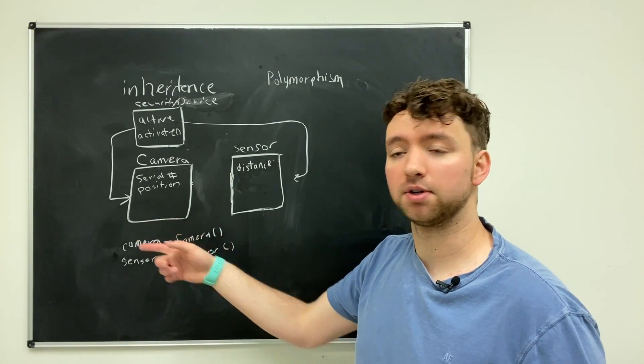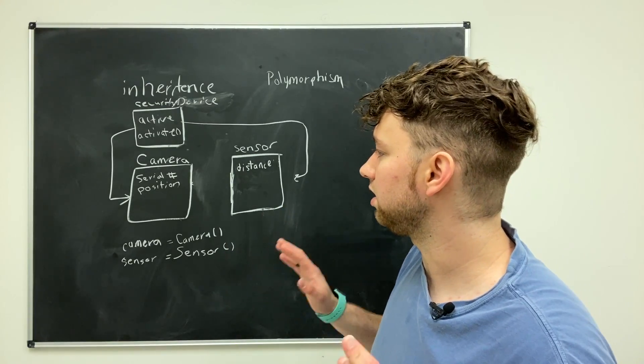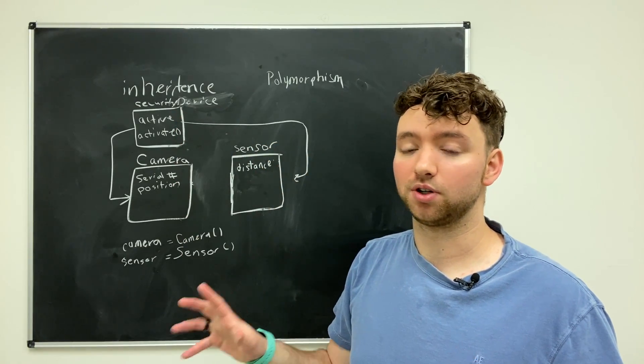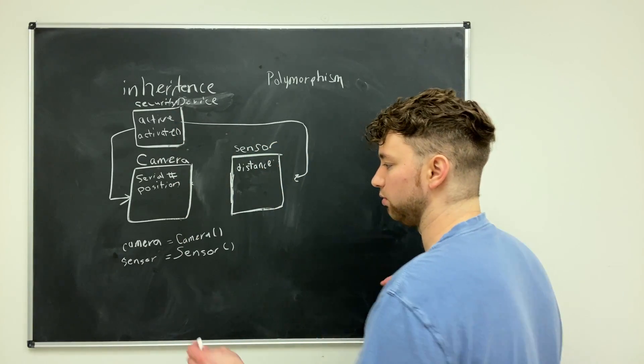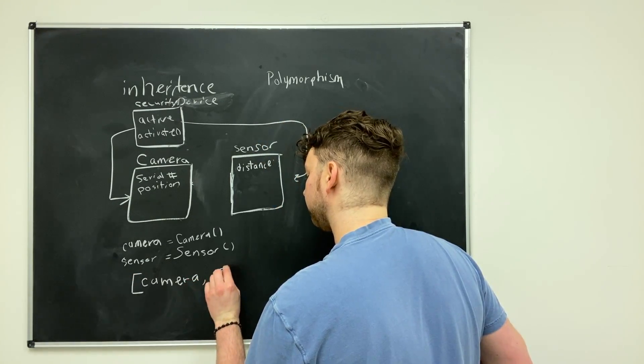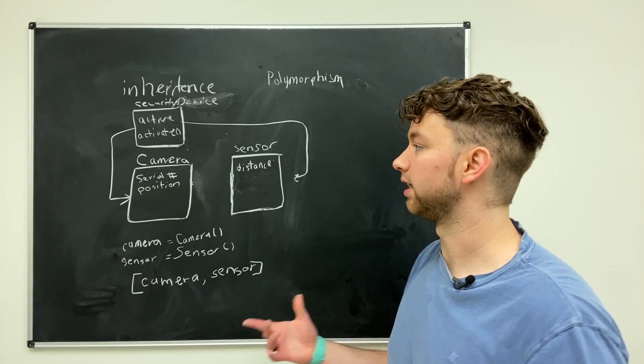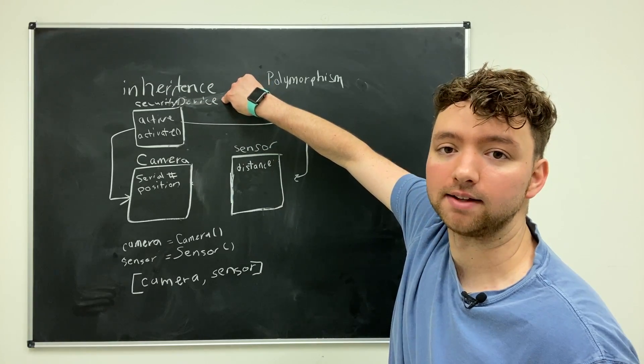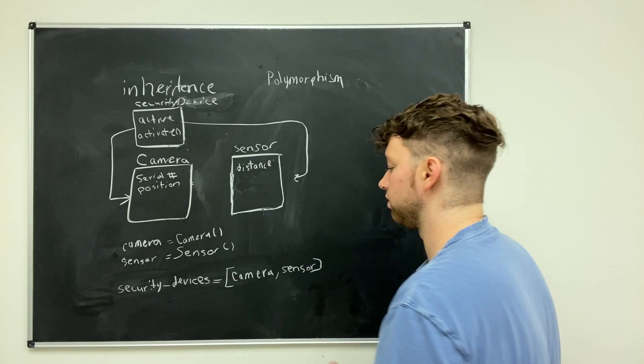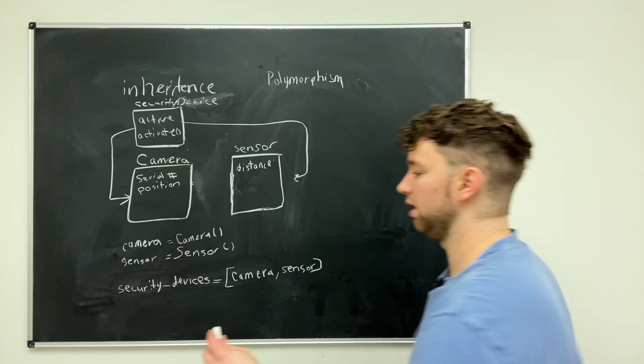Only the cameras are going to be cameras. Only the sensors are going to be sensors. But if we just be a little less specific and treat these cameras and sensors as security devices, then we're going to introduce some magical things. So as an example, we could add these both to a list or an array list. And we can assign this to a variable. I usually like to name it whatever the base class is plural, since it's a list. So it'll look something like this inside of Python.